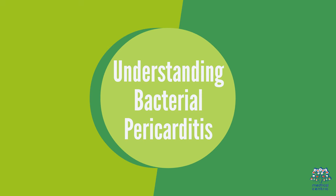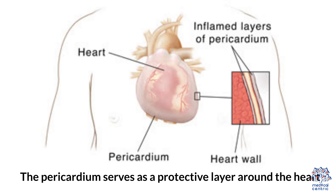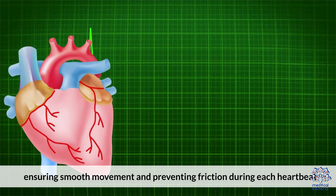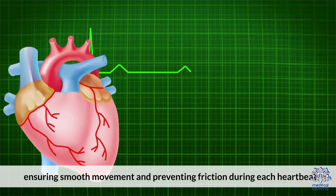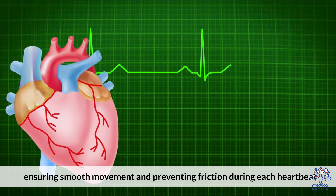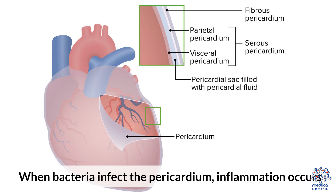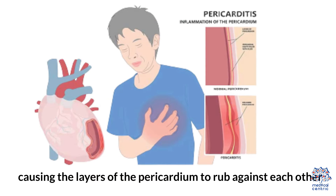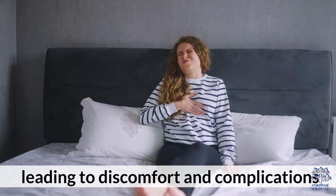Understanding Bacterial Pericarditis. The pericardium serves as a protective layer around the heart, ensuring smooth movement and preventing friction during each heartbeat. When bacteria infect the pericardium, inflammation occurs, causing the layers of the pericardium to rub against each other, leading to discomfort and complications.